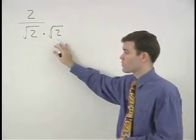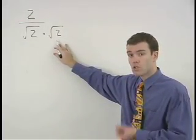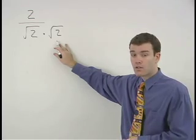Because the square root of 2 times the square root of 2 is the square root of 4 which equals 2, so the radical is gone.